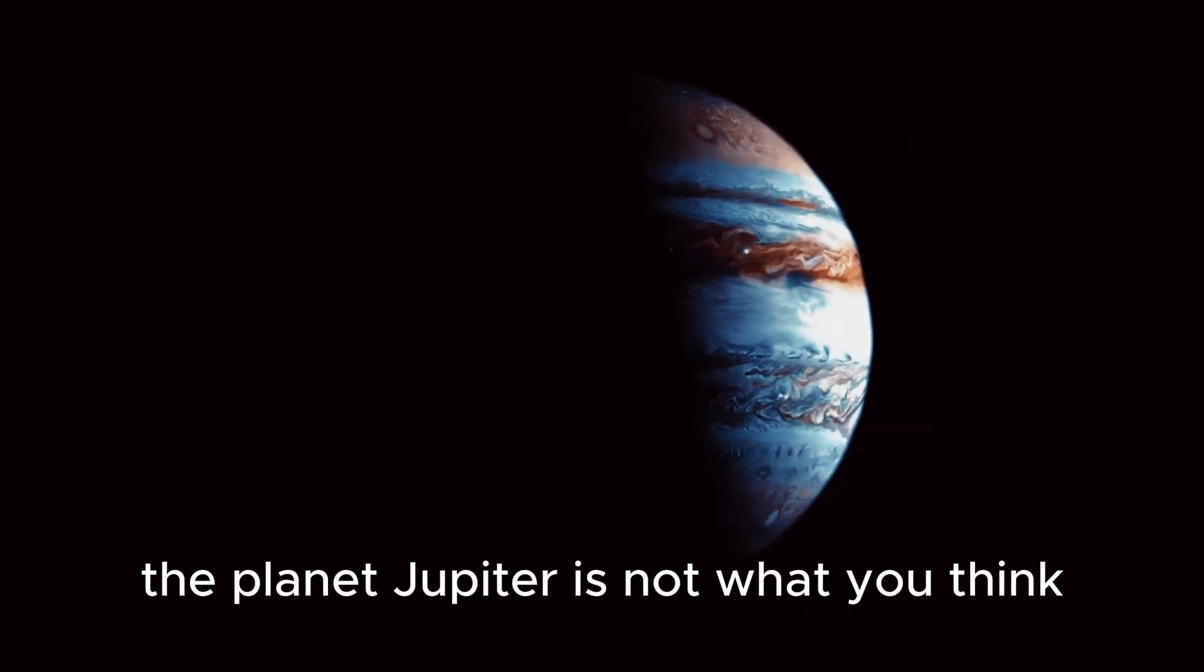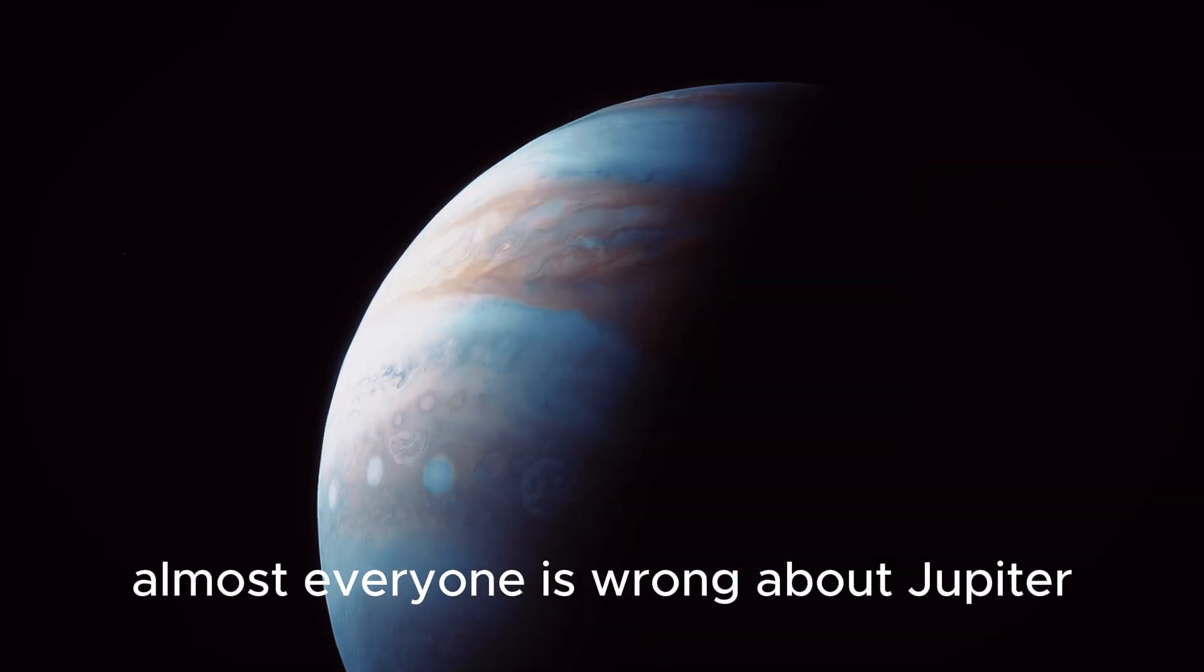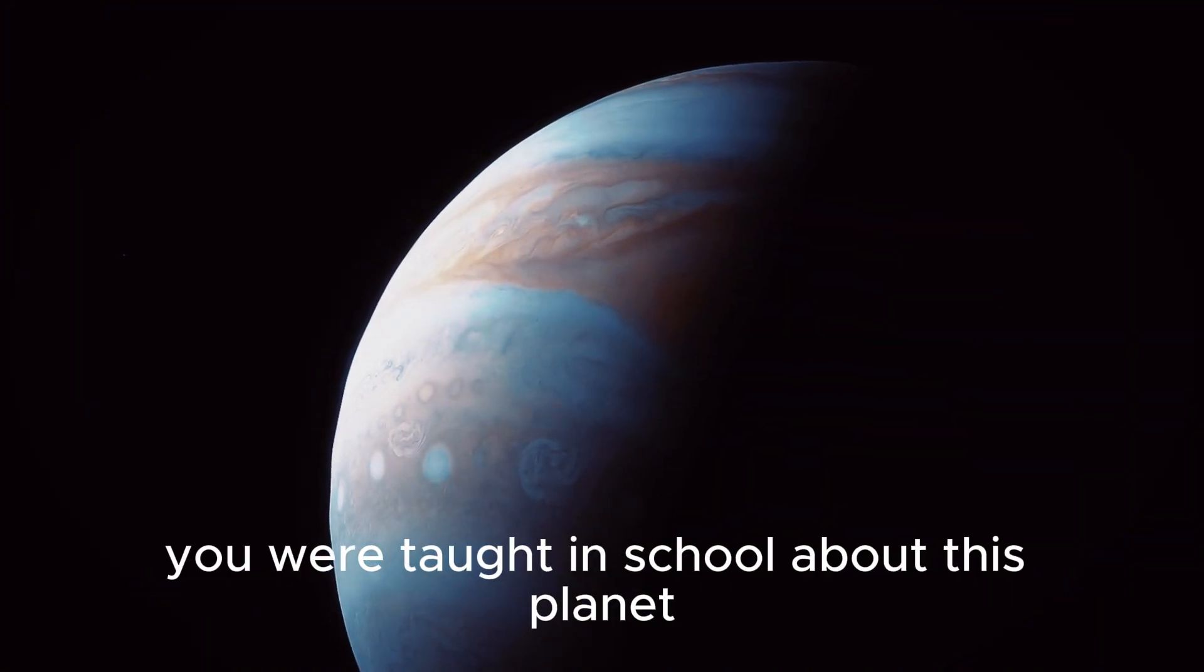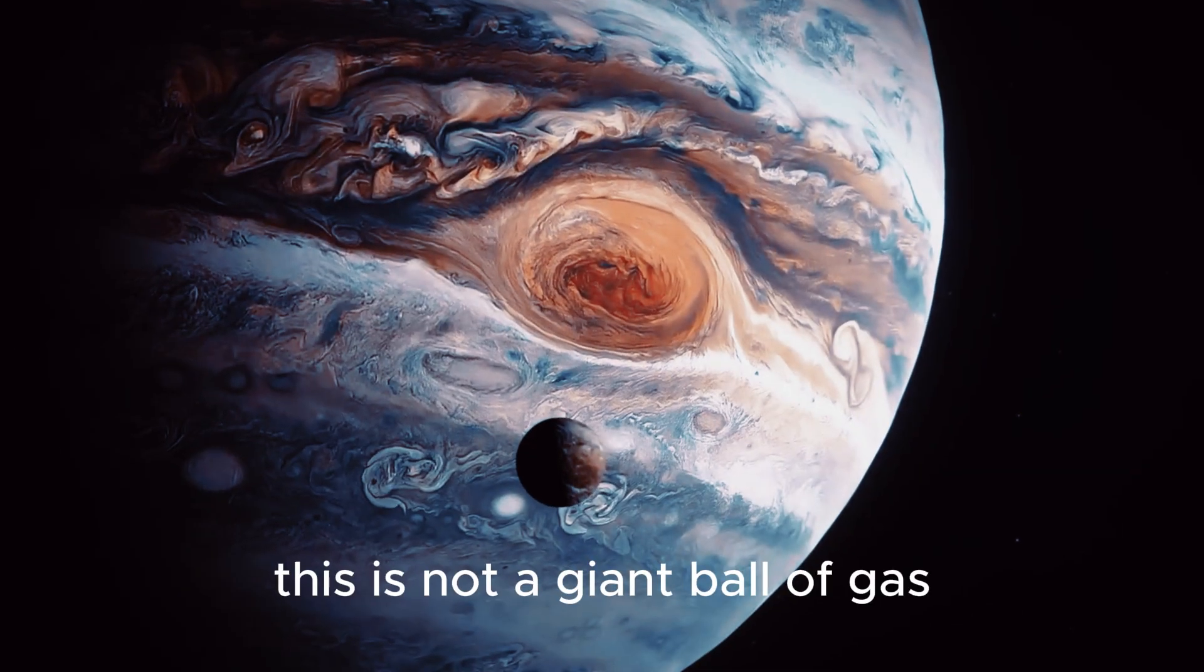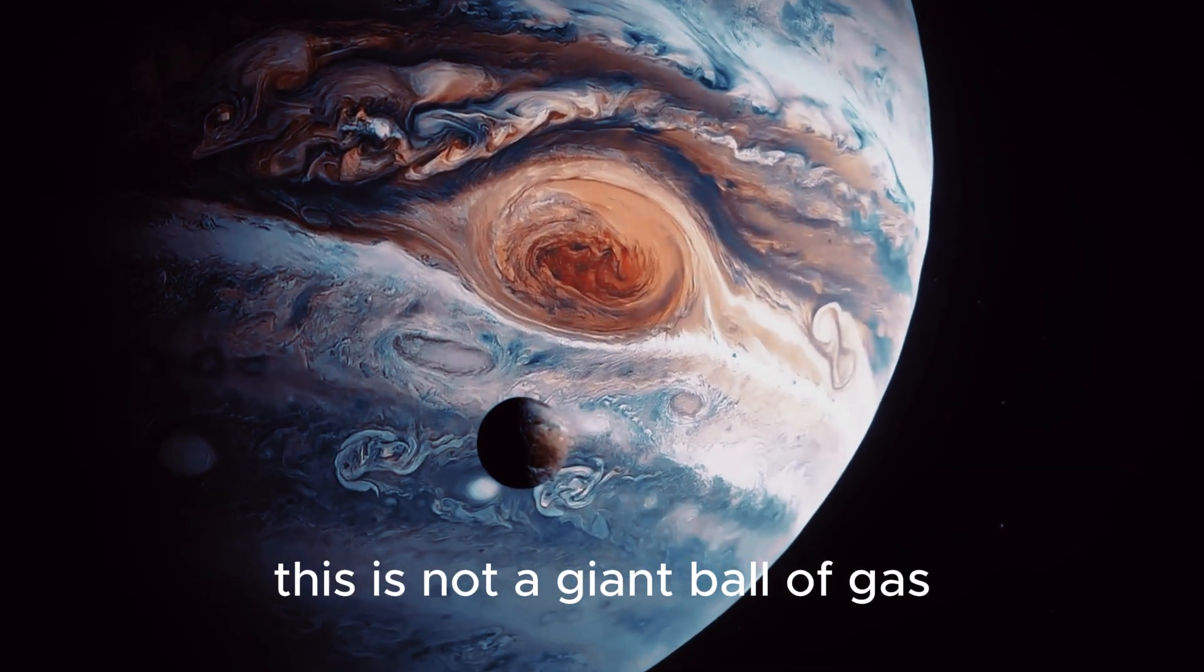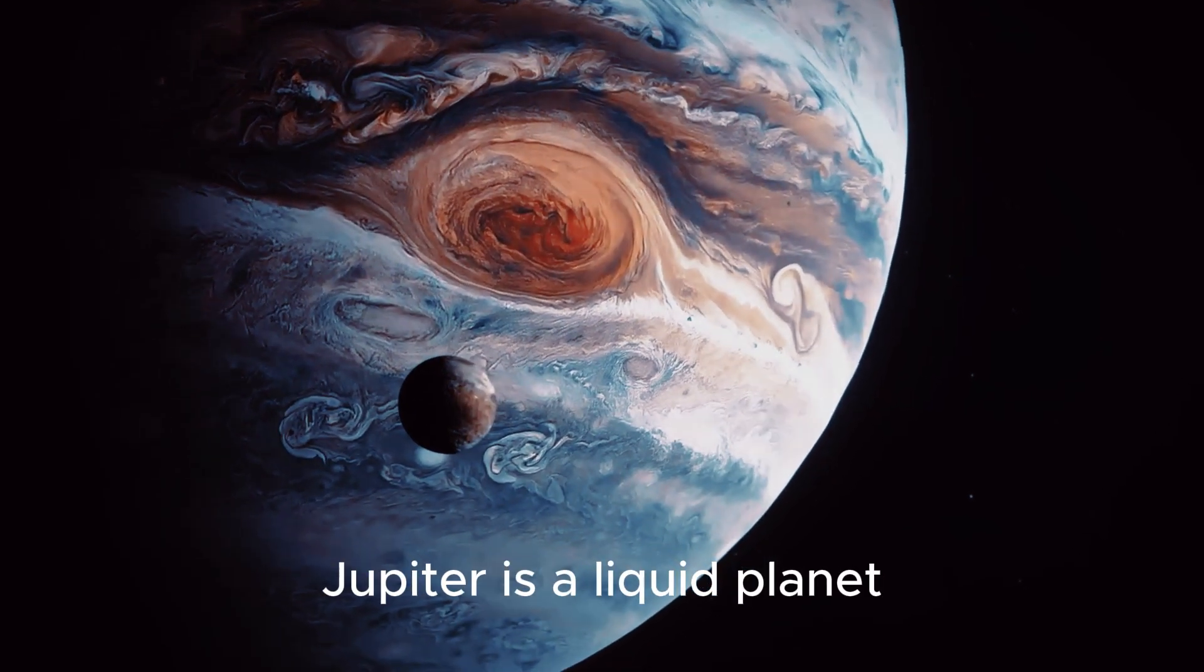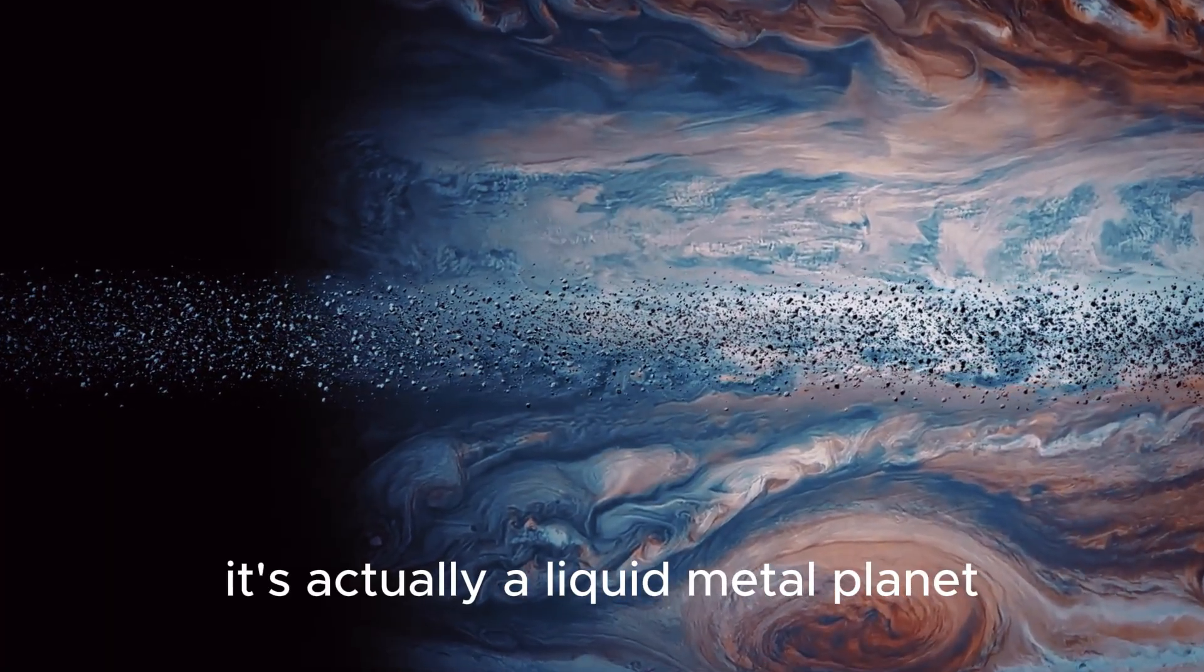The planet Jupiter is not what you think. Almost everyone is wrong about Jupiter because almost everything you were taught in school about this planet is wrong. This is not a giant ball of gas. Jupiter is a liquid planet, and as if that wasn't strange enough, it's actually a liquid metal planet.